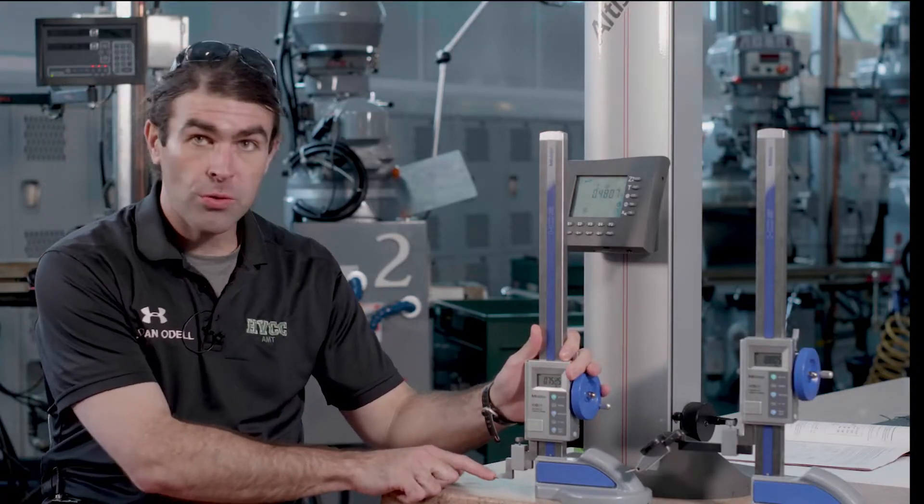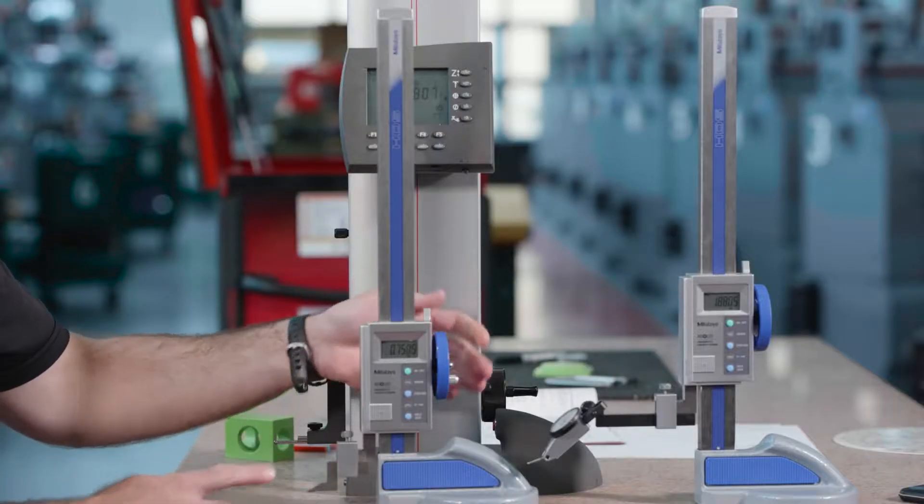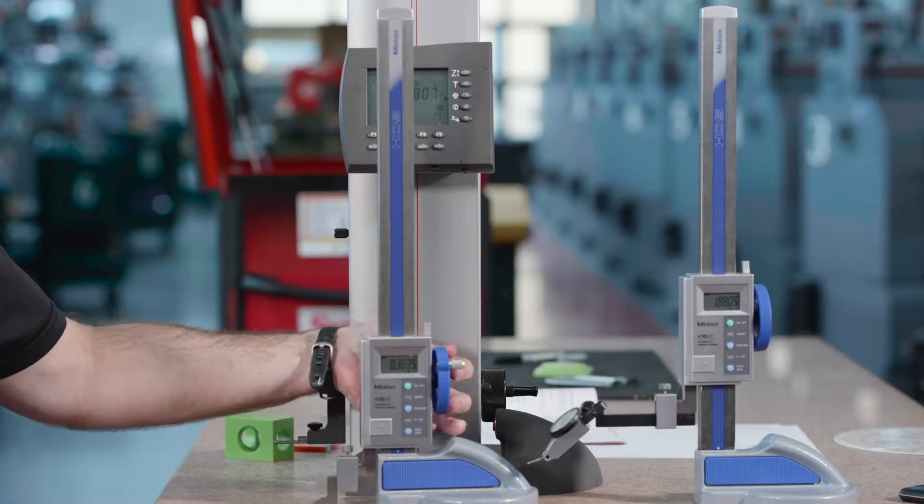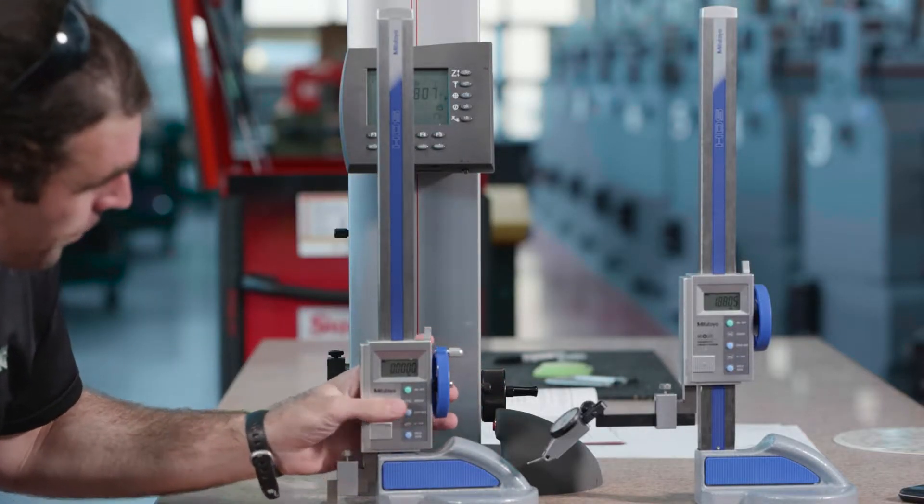A traditional height gauge looks something like this. There's a couple different ways you can use them. One, you could use the scriber attachment.